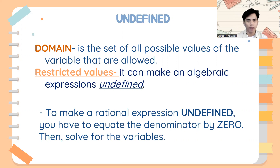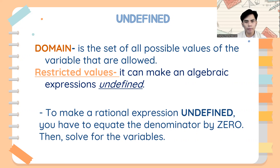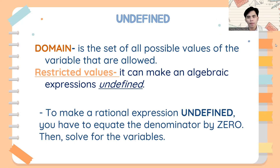Now, let's define first the important words or important pointers about rational expression. First is the domain. The domain is the set of all possible values of the variable that are allowed. So the domain refers to the values that, when substituted into the variable, will not make the denominator equal to zero. So when we say restricted values, they can make an algebraic expression undefined.